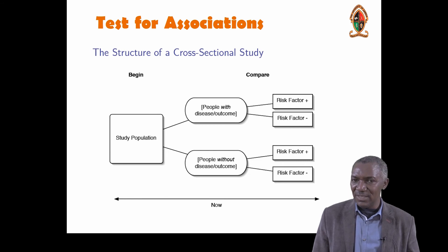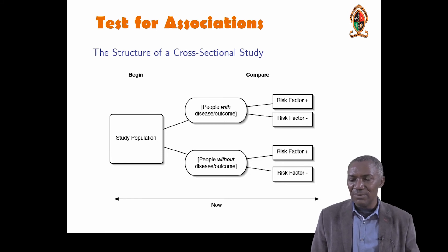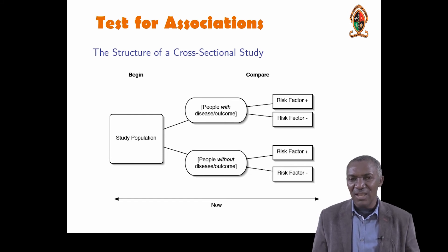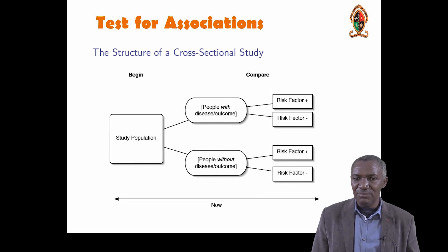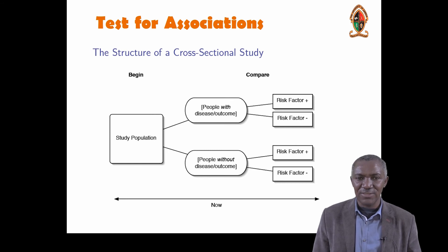In the earlier lecture, we talked about different types of variables. We have qualitative variables — we have the nominal, we also have the ordinal, and we have the interval. In this case, we're talking about two qualitative variables, and we want to see whether there's an association between variable A and variable B, so we use the Chi-square test.